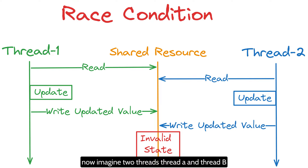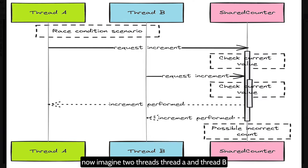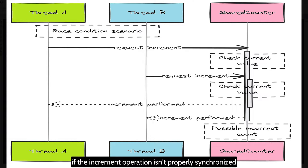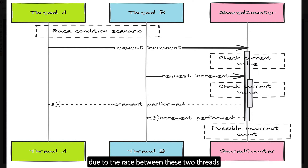Now imagine two threads, thread A and thread B. Both are trying to increment a count variable. If the increment operation isn't properly synchronized, the final value of count might be incorrect due to the race between these two threads to update the value.